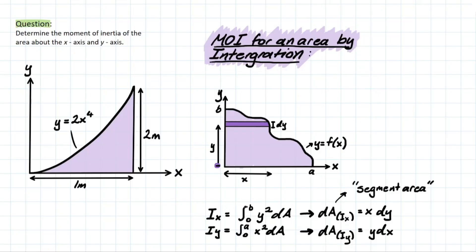If we consider our cross-section with respect to x, we can consider our area as a summation of infinitesimally small elements thanks to integration. Each of these strips contributes to the total moment of inertia by a quantity equal to y² dA — that's for the ix case — where y is the length perpendicular to our reference axis, x is our reference axis, y is the distance from the strip, and dA represents the segment area.